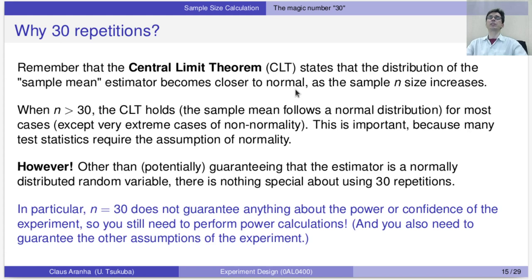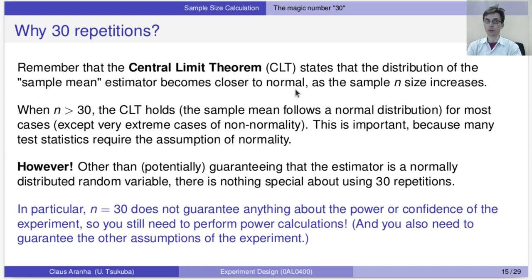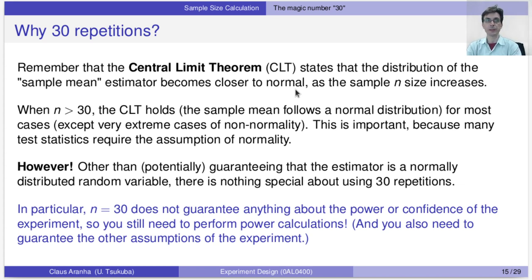The number 30 comes from the Central Limit Theorem. We talked about the Central Limit Theorem in Lecture 3. The CLT states that the distribution of the sample mean estimator becomes closer to normal as the sample size n increases. There is a paper that describes a result that when n is bigger than 30, the CLT holds, which means that the sample means follow a normal distribution for most relevant cases, except for very extreme cases of non-normality.